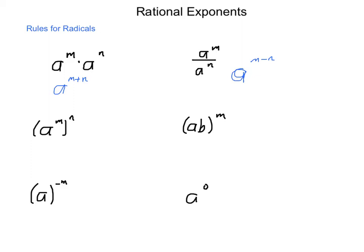Of course, a to the m to the n is a to the m times n. You multiply the exponents with each other. If you have a product, this will also work with a quotient, being raised to a power. You can distribute over the product. You cannot distribute an exponent over addition or subtraction, but you can over multiplication or division. And what this becomes is a to the m times b to the m.